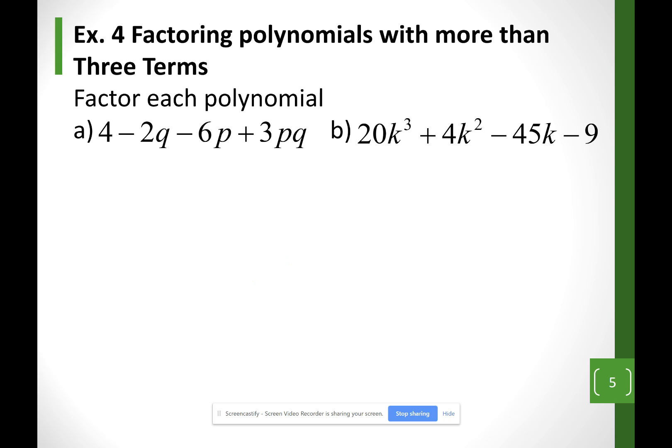So looking in my example A, I have four terms. I'm only going to be looking at the first two terms. The greatest common factor of the first two terms is a 2. I'm going to factor out a 2 out.